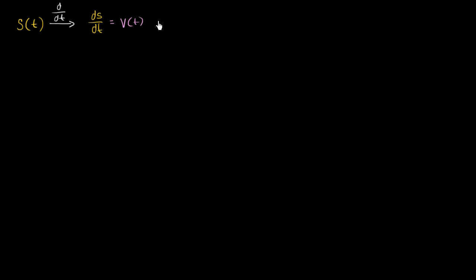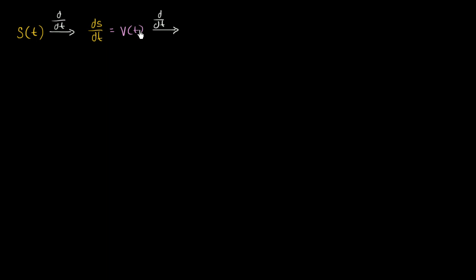Now, what if we were to take the derivative of that with respect to time? We could either view this as the second derivative — we're taking the derivative not once, but twice of our position function — or you could say that we're taking the derivative with respect to time of our velocity function. This is going to be dv/dt, the rate at which velocity is changing with respect to time. And that's also called acceleration. This is going to be our acceleration as a function of time.